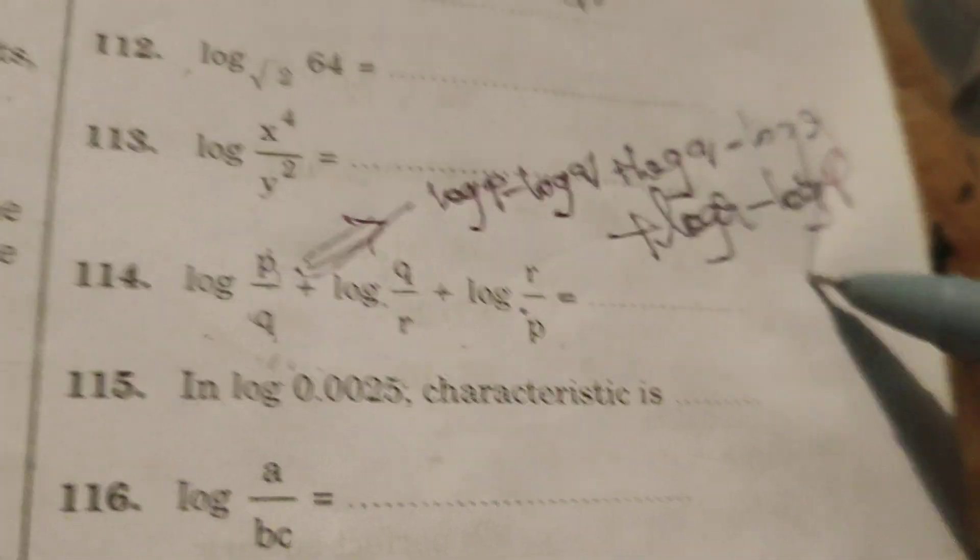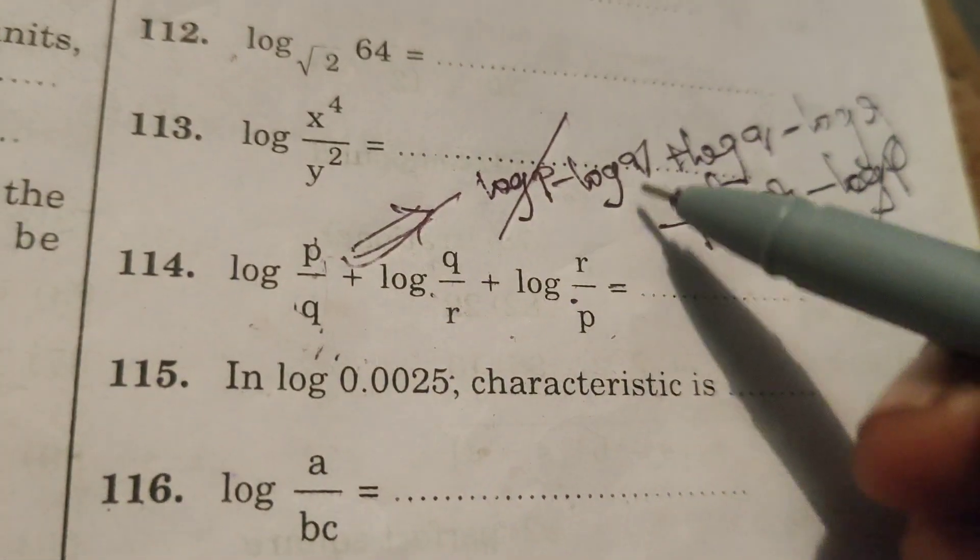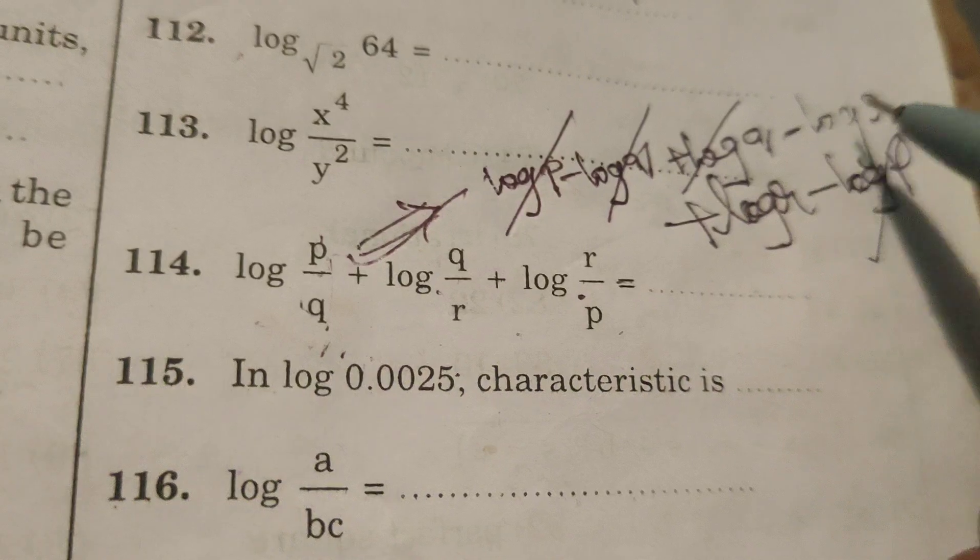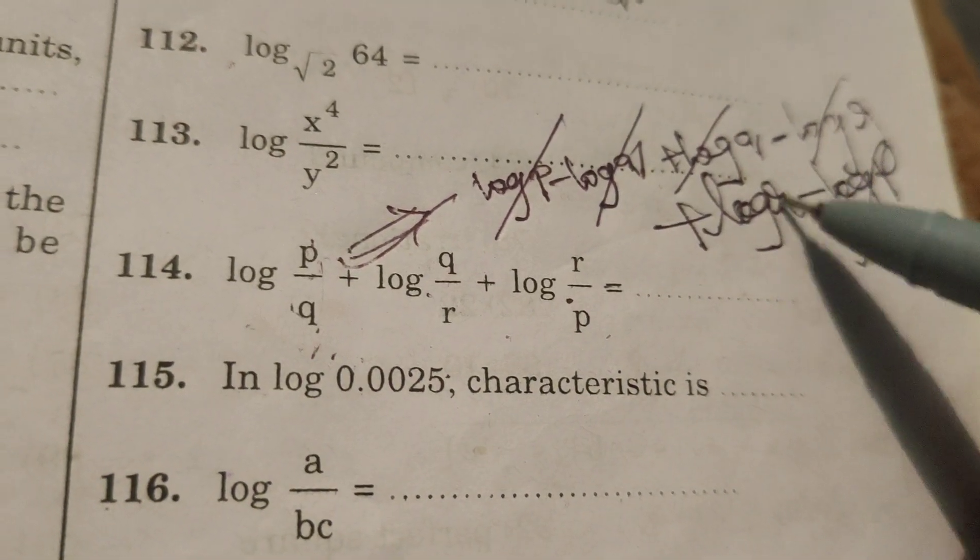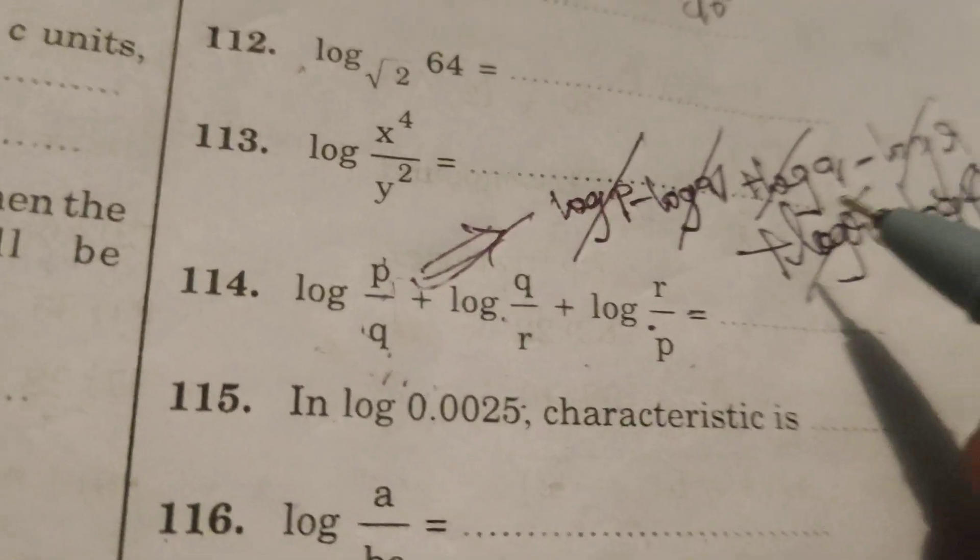Okay. Here, minus log P plus log P, minus log Q plus log Q, minus log R plus log R gets cancelled.